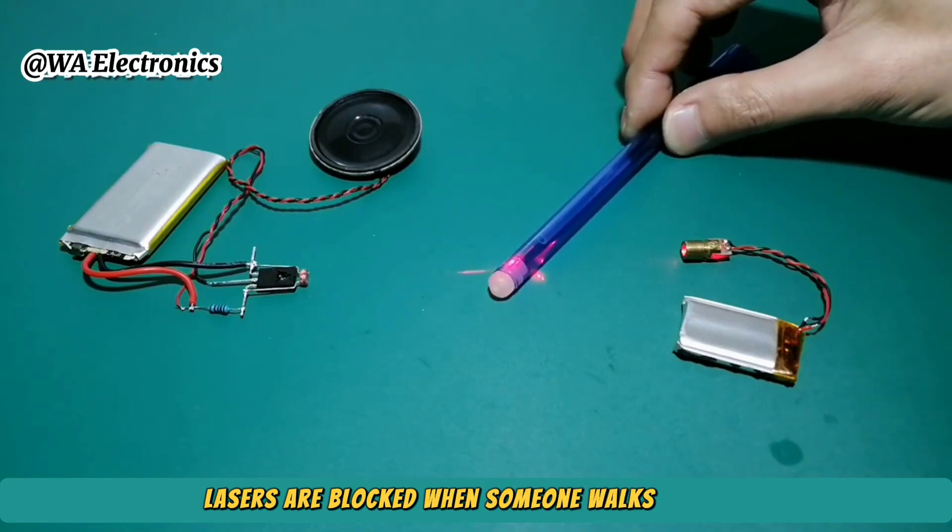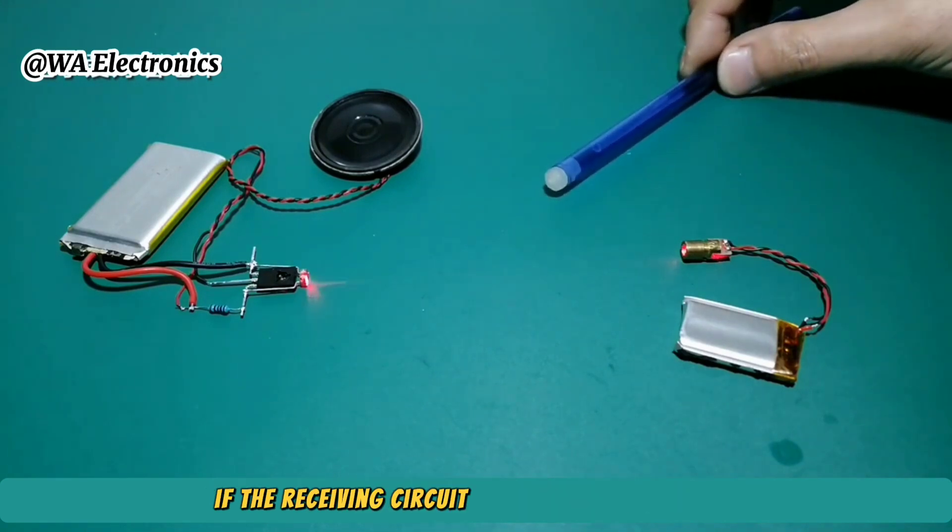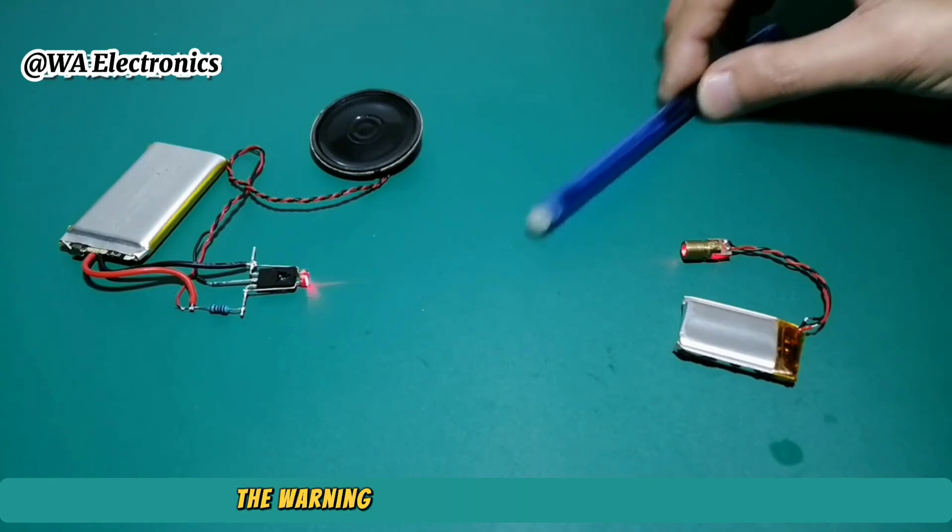Lasers are blocked when someone walks by the door. If the receiving circuit cannot detect the laser, a warning will be activated.